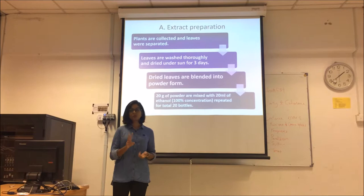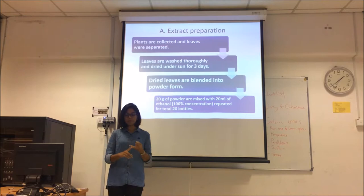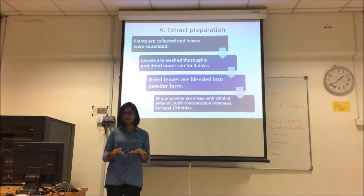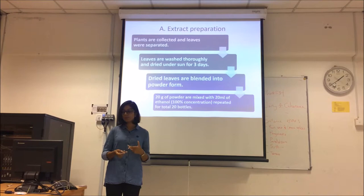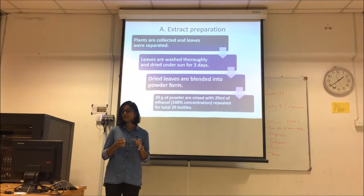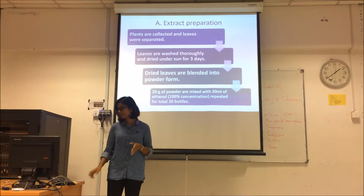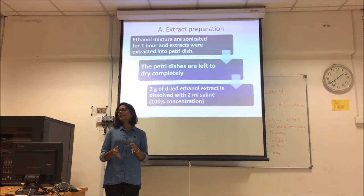My methodology is divided into two parts. Part A is extract preparation and Part B is the experimental procedure. For extract preparation, the plant will be collected and the leaves separated. The leaves are then washed thoroughly to avoid any contaminants or insects. After that, they are dried under the sun for three days, then blended into powder form. A 20-gram, 100% concentration of dried Ocimum sanctum powder was prepared by mixing it with 20 ml of ethanol.